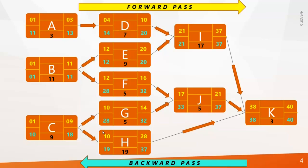Now we have calculated early start, early finish, late start, and late finish for all activities. If you're confused between early start and late start: look at activity A — you can start it on any day between day 1 and day 11, and delaying it between early start and late start won't affect the total project duration. This period between early start and late start is called float or total float — it is simply the period an activity can be delayed. To calculate float, take the difference between late start and early start, or late finish and early finish.